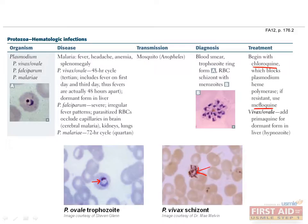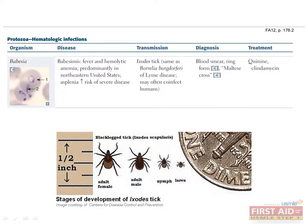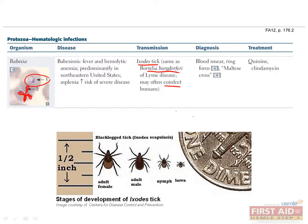To prevent relapse caused by P. ovale and P. vivax, use primaquine. The next protozoan causing hematological infection is Babesia, transmitted by the Ixodes tick — the same tick that transmits Borrelia burgdorferi, the spirochete that causes Lyme disease. Therefore, patients can become co-infected with both Borrelia and Babesia from the same tick. In Babesiosis, expect fever and hemolytic anemia. Diagnosis is made by blood smear showing the Maltese cross form — four merozoites asexually budding but attached together — within red blood cells. You may also see a ring form that can be confused with Plasmodium. Treat with quinine or clindamycin.